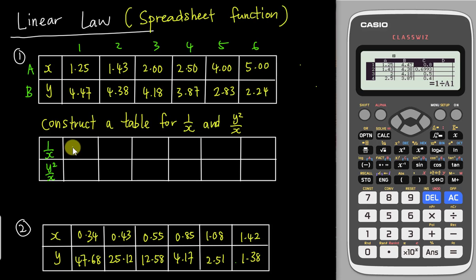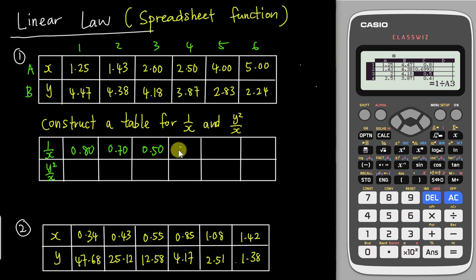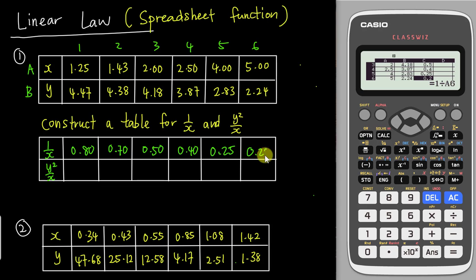Copy the results to two decimal places: the first one is 0.80, next is 0.70, then 0.50, then 0.40, then 0.25, and last is 0.20. This calculator does all of them at once instead of one by one.